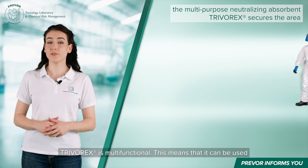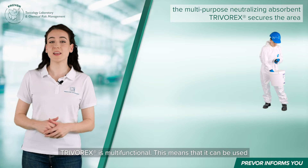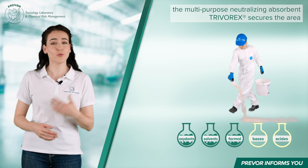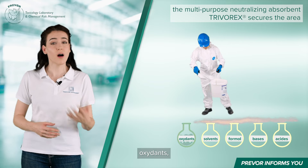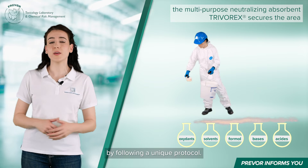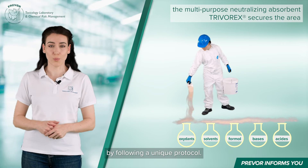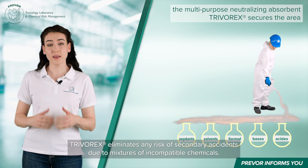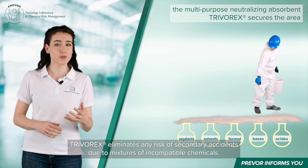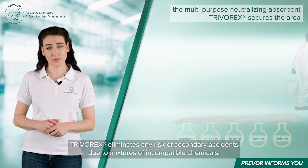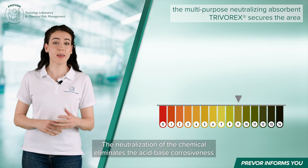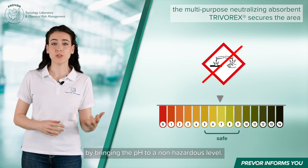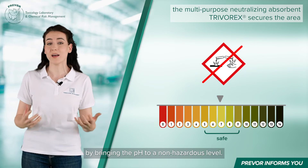Trivorex is multifunctional. This means that it can be used on all your chemicals — acids, bases, formaldehyde, solvents, oxidants — by following a unique protocol. Trivorex eliminates any risk of secondary accidents due to mixtures of incompatible chemicals. The neutralization of the chemical eliminates the acid-base corrosiveness by bringing the pH to a non-hazardous level.